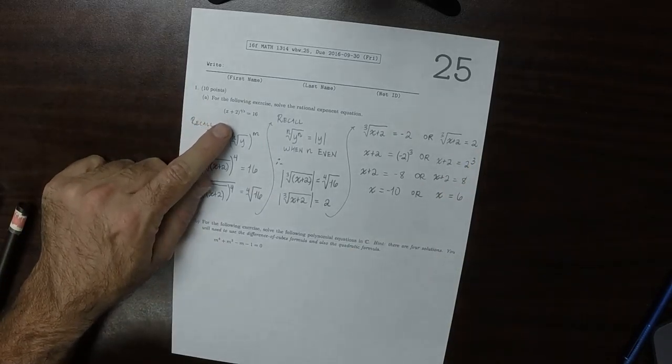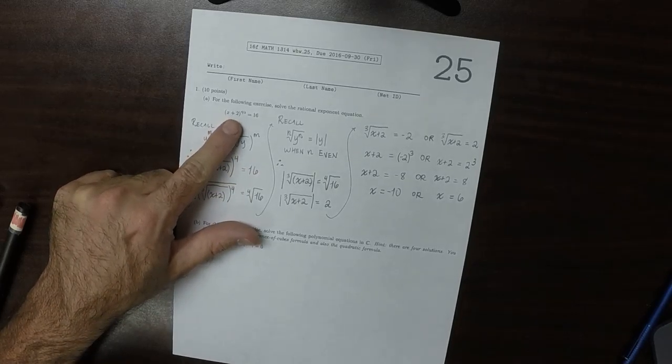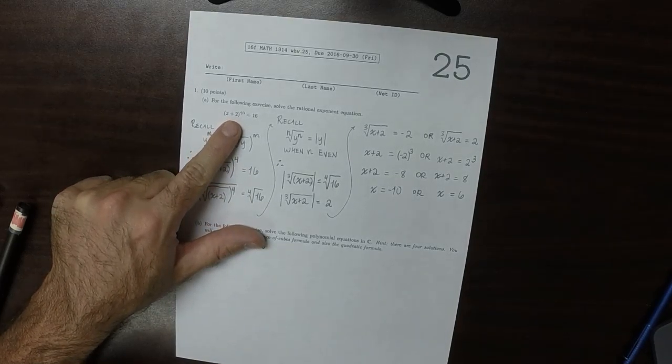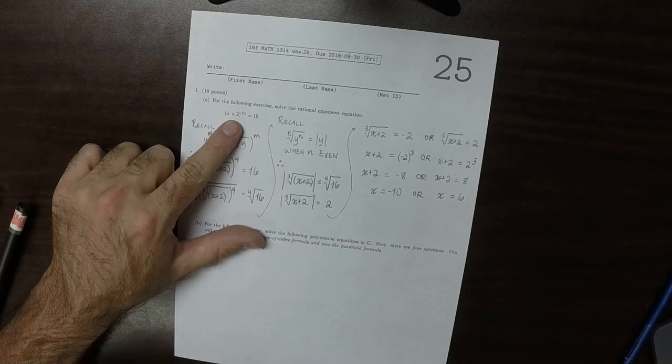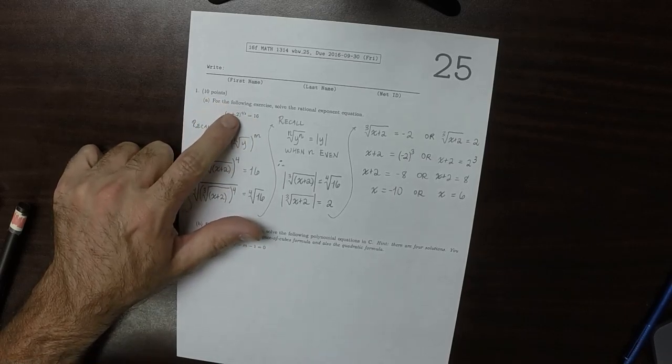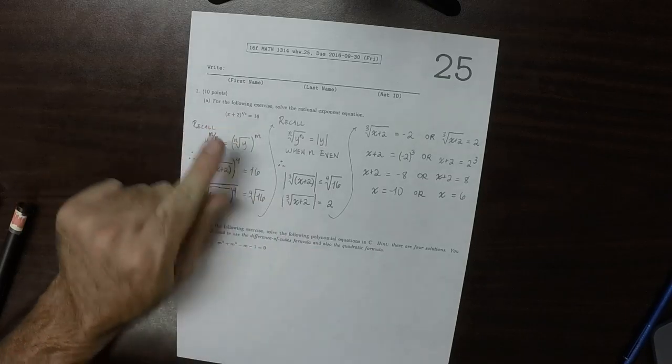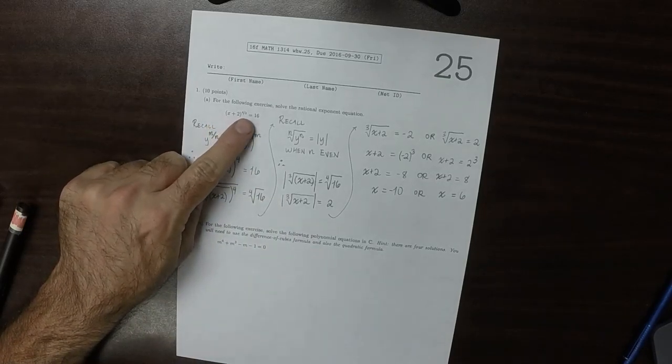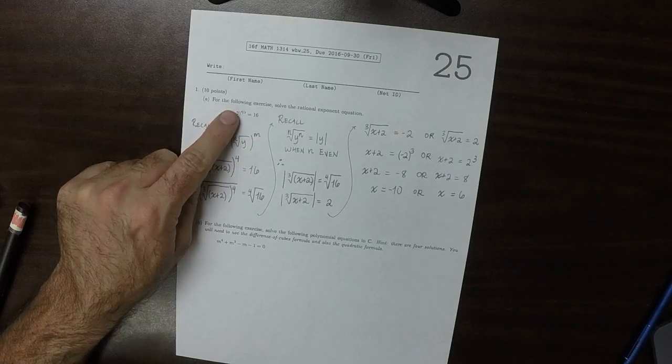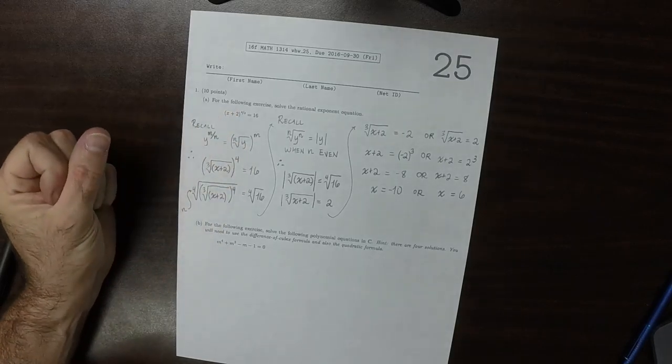Let's make sure that sounds reasonable. Negative 10 plus 2, that's negative 8. The cube root of negative 8 is negative 2, and negative 2 to exponent 4 is 16. So that's good. And then if x is 6, 6 plus 2 is 8, cube root of which is 2, fourth exponent of which is 16. Good.